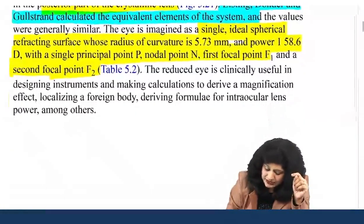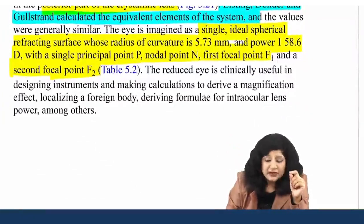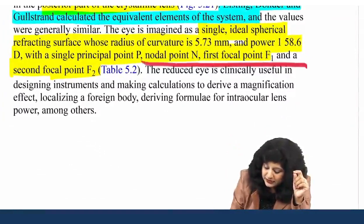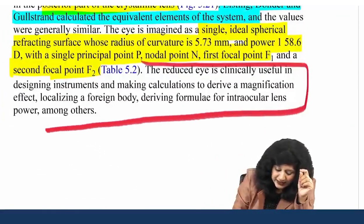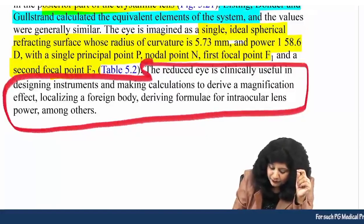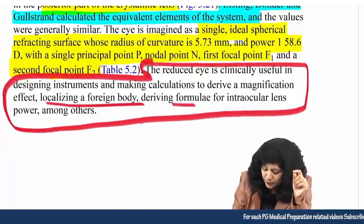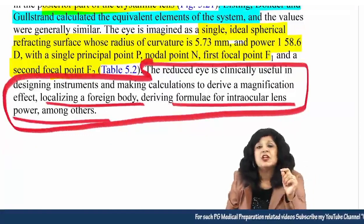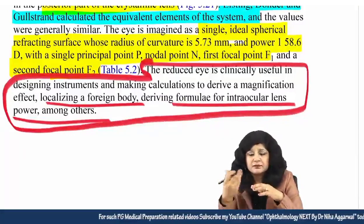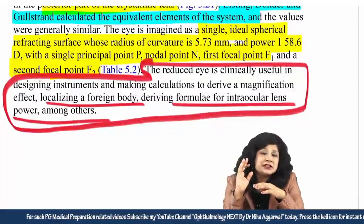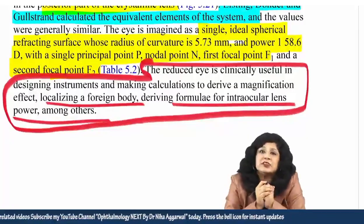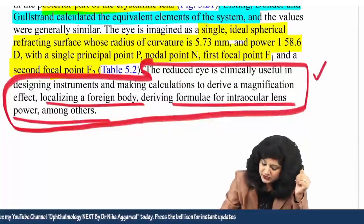The reduced eye is clinically useful — it is Listing's reduced eye which becomes important clinically: useful in designing instruments, calculations for magnifying effect, localizing a foreign body, the formula for intraocular lens, and other things. It is Listing's reduced eye which is found useful, not Gullstrand's schematic eye.